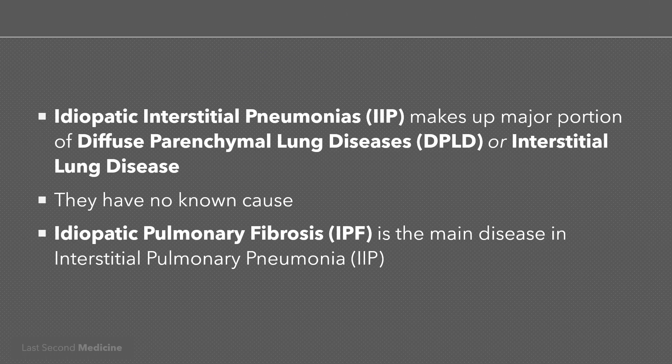As discussed in the other video about diffuse parenchymal lung diseases on this channel, idiopathic interstitial pneumonias represent a major subgroup of diffuse parenchymal lung diseases grouped together as a result of their unknown etiology. They are often distinguished by the predominant histological pattern on tissue biopsy, and hence are frequently referred to by their pathological description. Idiopathic pulmonary fibrosis is a very common disease within this group.